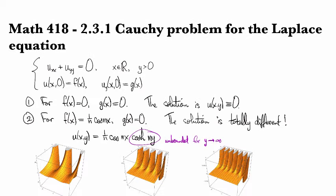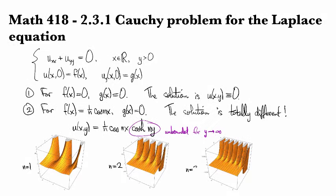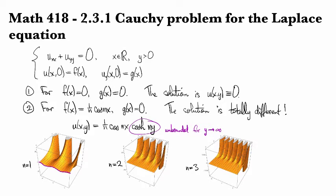Let's take a look. Here are the solutions for n equals 1, n equals 2, and n equals 3. On the one hand, you can see that the boundary value right here, 1 over n cosine nx, the amplitude is getting closer and closer to 0.